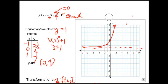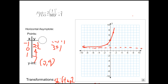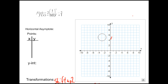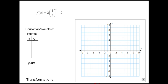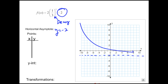Let's do one more — a decay example. We have y equals 2 times 1/3 to the x minus 2. This is a decay because 1/3 is less than 1. The horizontal asymptote is y equals negative 2. I'll graph that line in. I should be imagining a plane landing. Let's plug in negative 1, 0, and 1 for x. For x equals negative 1: 1/3 to the negative 1 becomes 3, times 2 is 6, minus 2 is 4. So when x is negative 1, y is 4.